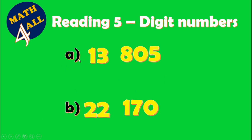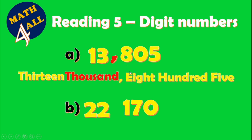Another example. Count three digits from the right side — one, two, three — and put a comma. This comma is called 'thousand.' Read from the left side: here we have thirteen thousand eight hundred five.